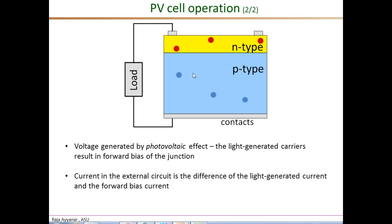So the current flowing in the external circuit is then the difference between the light generated current and the forward bias current. And the voltage is produced by this forward bias in this polarity as indicated. And this condition actually gives us the model for the PV cell consisting of a light generated current source in parallel with the P-n diode forward biased.